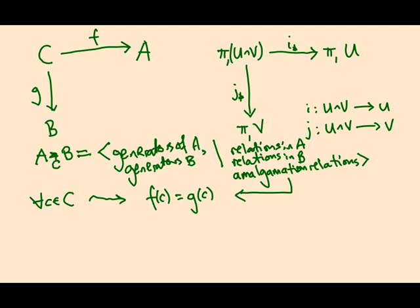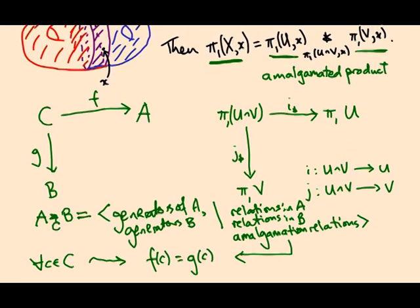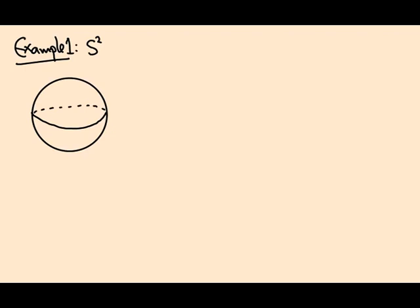What does this mean geometrically in terms of the fundamental group? C is supposed to be the loops contained in both U and V, and this relation is just saying: if we consider a loop in the intersection as a loop living in U or a loop living in V, it doesn't matter — it's the same loop. That's what the amalgamation relation is getting at. So let's do some examples of amalgamated products coming from topology.